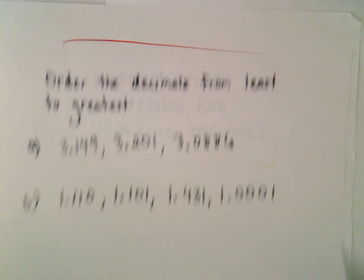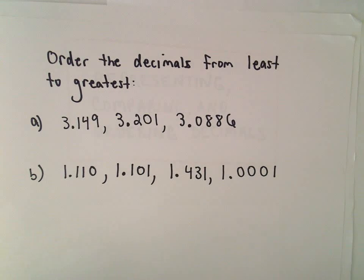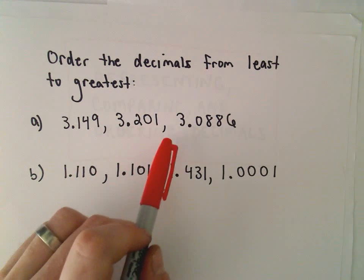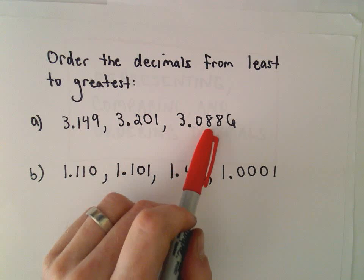All right, here we're going to look at some examples of ordering decimals from smallest to largest. In part A, we've got 3.149, 3.201, and 3.0886.